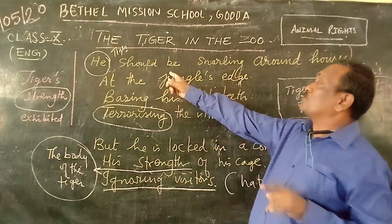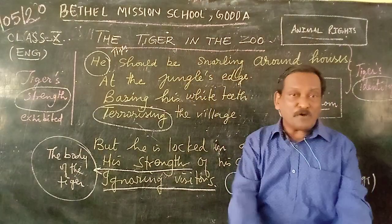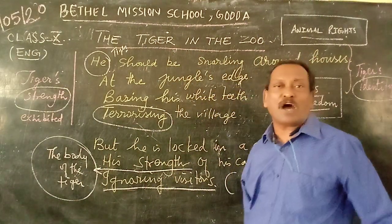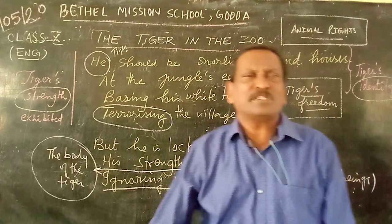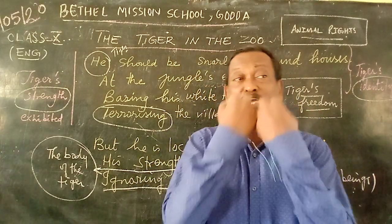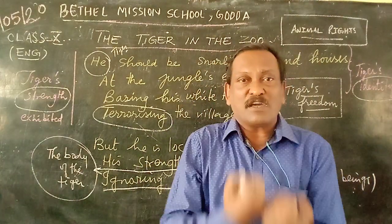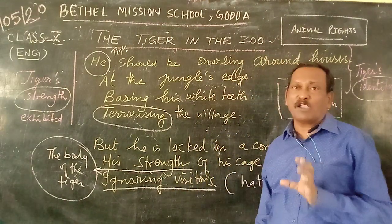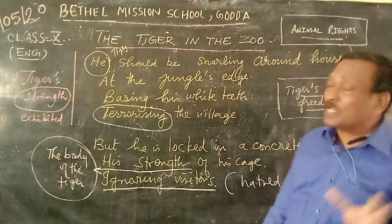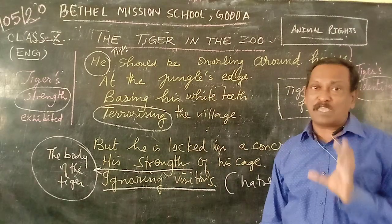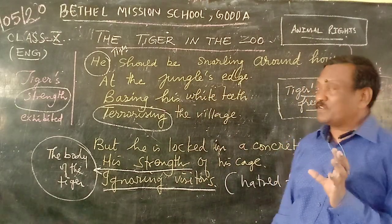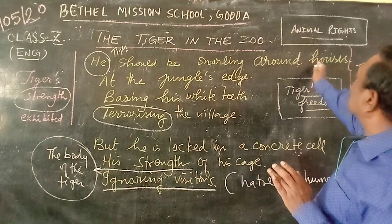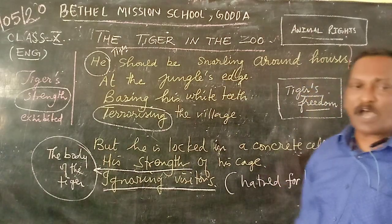What does the tiger do? What is he supposed to do? He is supposed to be snarling around the houses. What is the meaning of snarling? Snarling means making a strong voice — a strong call or growling. Snarling means making a terrific sound. So the tiger is supposed to be snarling around houses.